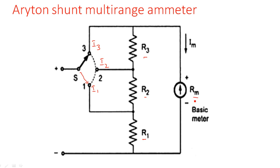In the R8N shunt multirange ammeter, a cascaded connection of resistors is taken, and all these resistors must be connected in parallel with the ammeter. All these groups of resistors — from here to here — for four ranges, four different resistors we have to take, all connected in parallel with the ammeter. The original behavior of the ammeter should not be violated.